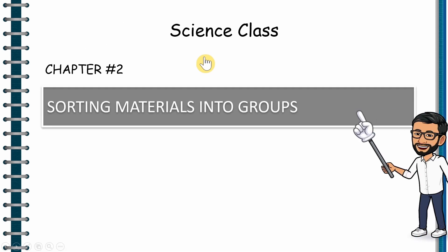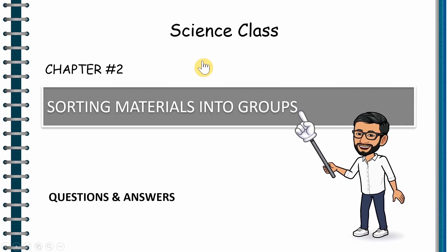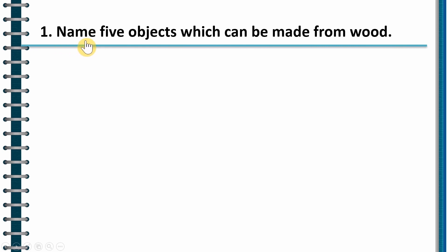Hello dear students, today we are going to discuss question and answers from the chapter sorting materials into groups. And the first question in that list is name five objects which can be made from wood.